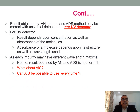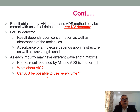Results obtained by the AN method and ADS method will only be correct with a universal detector and not with a UV detector. Universal detectors include ELSD and MS detectors. For a UV detector, the response depends upon concentration as well as the absorbance of the molecules. Absorbance of a molecule depends upon its structure as well as the wavelength used. As each impurity may have a different wavelength maxima, the result obtained by AN and ADS methods is not correct. The question then comes: what about the AIS method and can it be used every time?